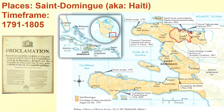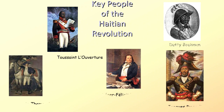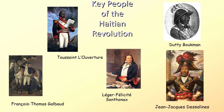College Board Topic 5.5: The French Revolution's Effects — explain how the events and developments of the French Revolution influenced political and social ideas from 1648 to 1815. Place: Saint-Domingue, also known as Haiti. Time frame: 1791 to 1805. Key people of the Haitian Revolution: Toussaint Louverture, François-Thomas Galbeau, Léger Félicité Saint-Onax, Dari Boucman, and Jean-Jacques Dessalines.